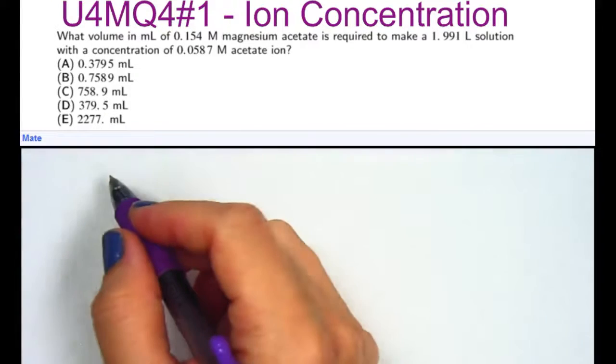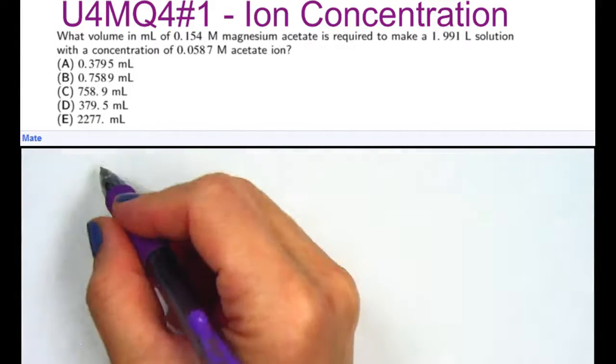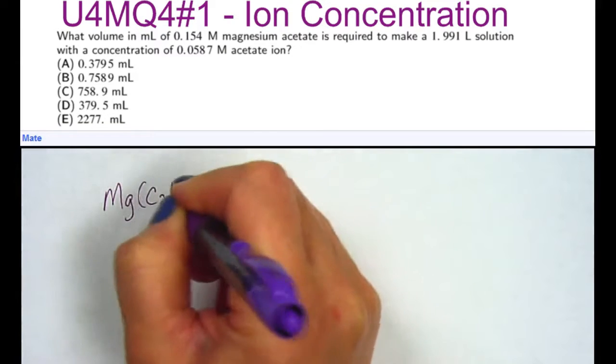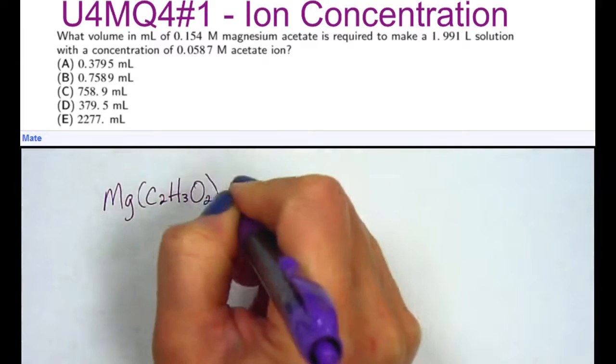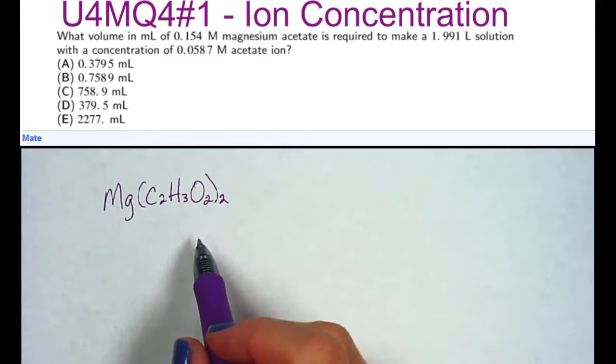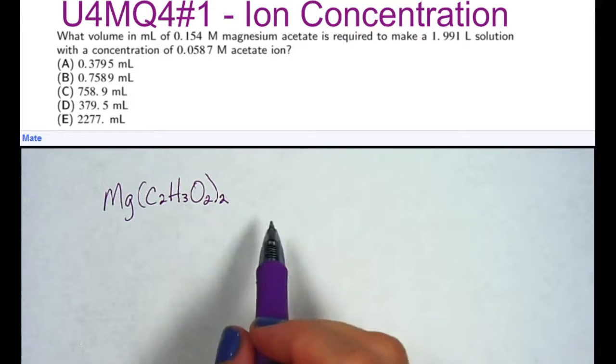What volume in milliliters of a 0.154 molar magnesium acetate, this is the formula for magnesium acetate, is required to make a solution with a specific concentration of acetate ion?